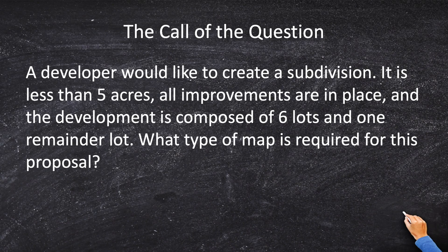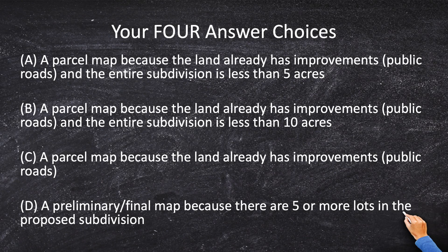The call of the question states: a developer would like to create a subdivision. It is less than five acres, all improvements are in place, and the development is composed of six lots and one remainder lot. What are you going to do? We've got four choices: A) a parcel map because it's less than five acres and there are no improvements; B) a parcel map because it's less than 10 acres and there are no improvements; C) a parcel map because there are no improvements required; and D) a preliminary final map because there are more than five lots.